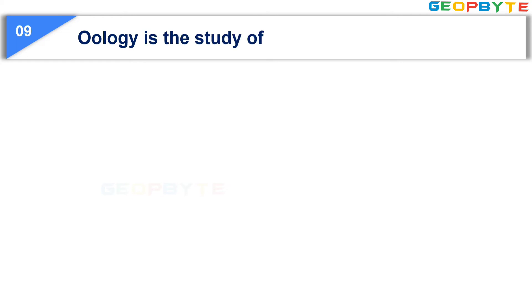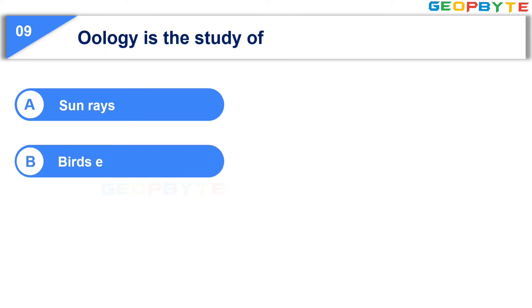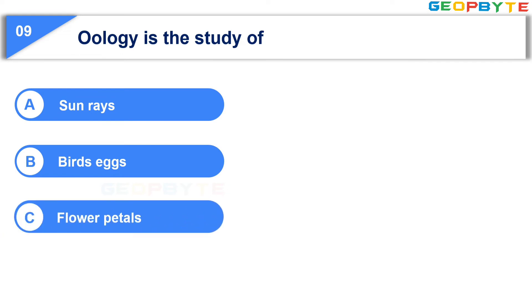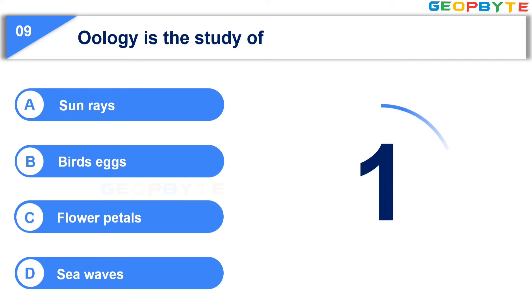The ninth question is: Oology is the study of. Option A: Sunrays. Option B: Bird's eggs. Option C: Flower petals. Option D: Sea waves. Your time starts now. Your time is up and the correct answer is Option B: Bird's eggs.